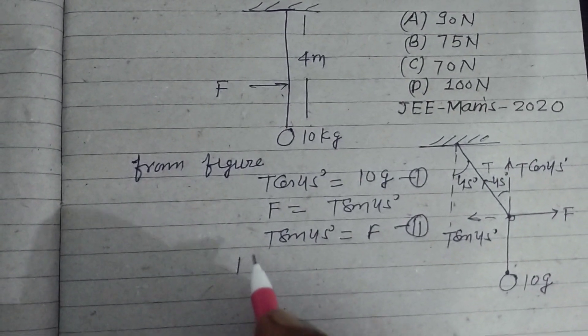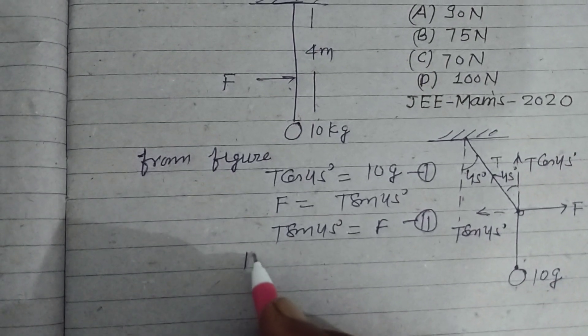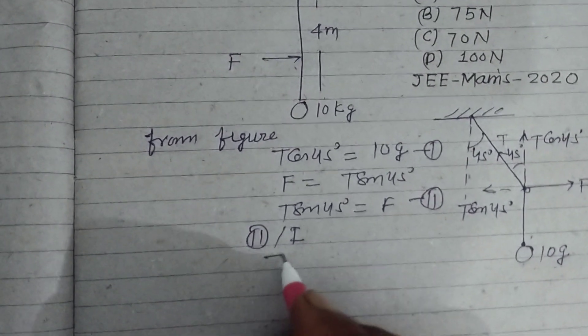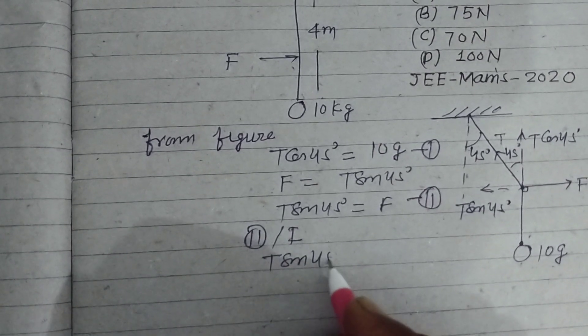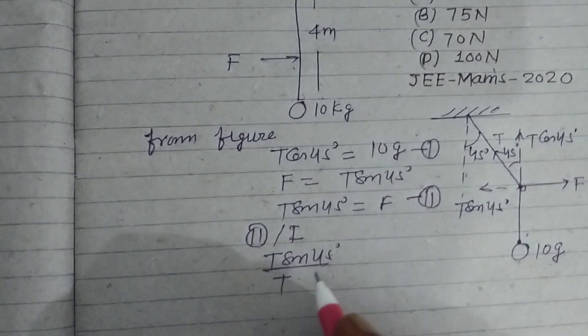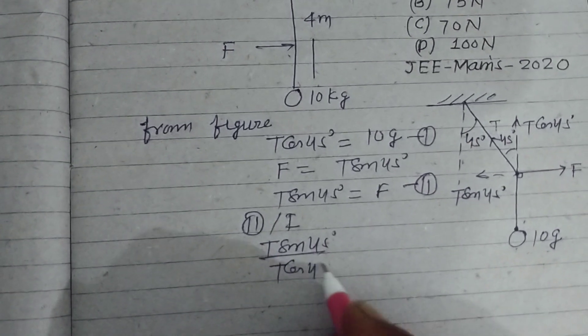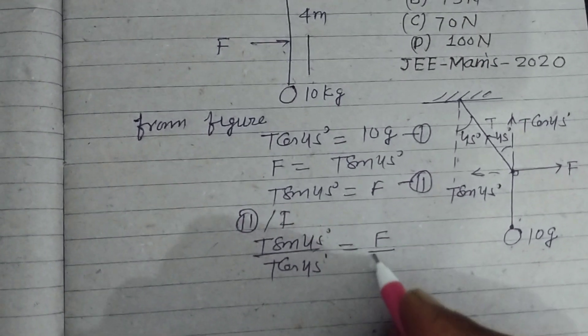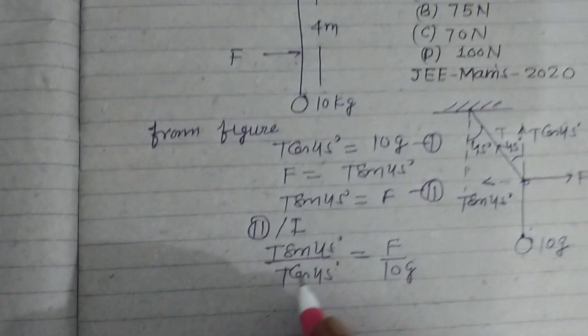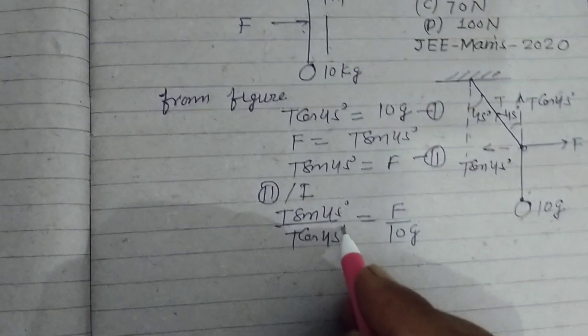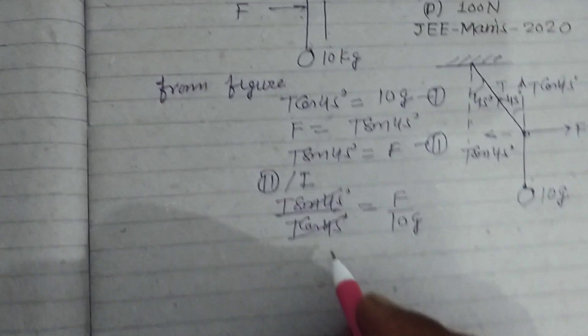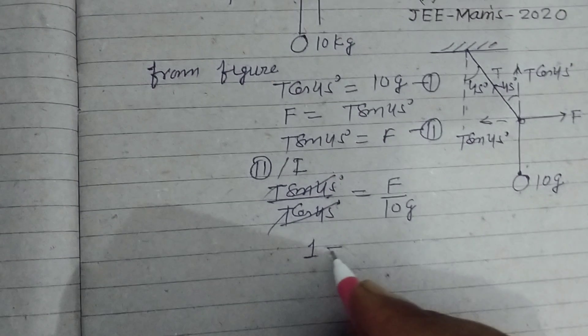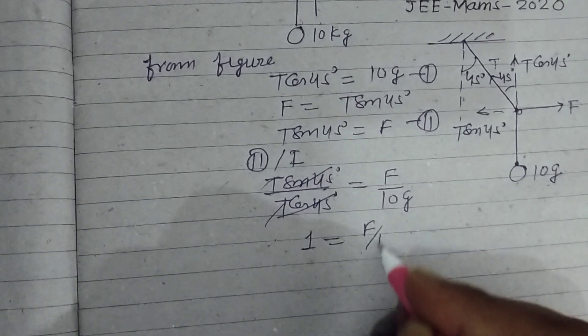Now dividing second by first, we get T sin 45° upon T cos 45° equals F over 10G. So these are similar. Because the value of sin 45° and cos 45° are the same, and T cancels, we get 1. So this is F upon 10G.